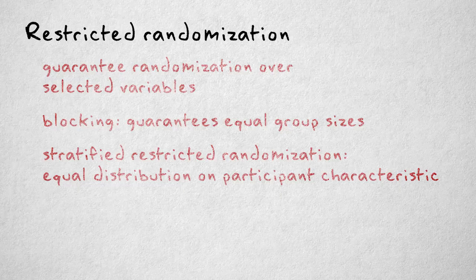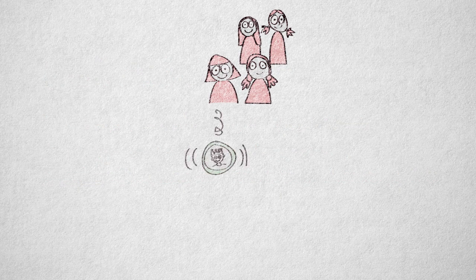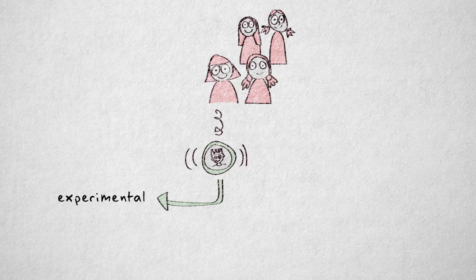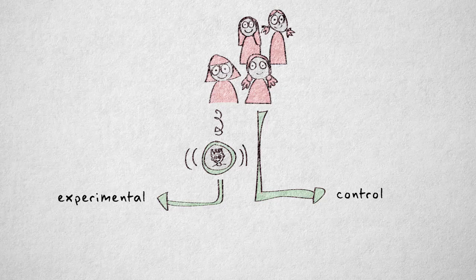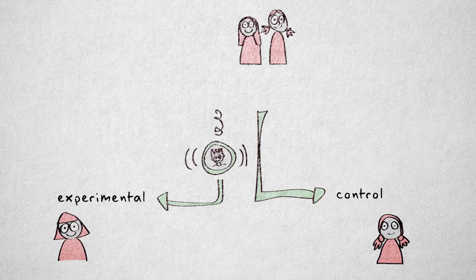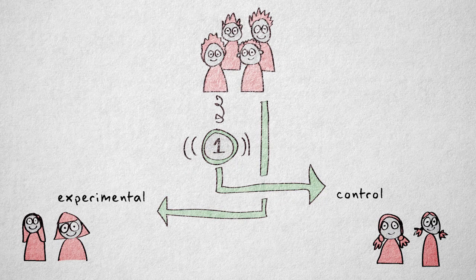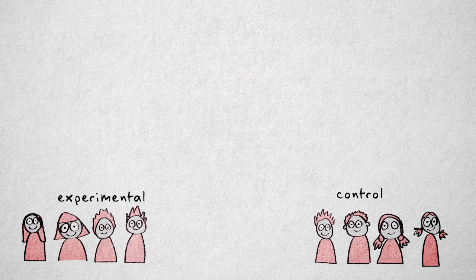We can arrange this by first pairing up all the girls and, for each block of girls, flipping a coin to determine to what condition the first girl is assigned. We then automatically assign the second girl to the other condition. We now have a girl in each condition. We do the same for the second block of girls and end up with two girls in each condition. The same method is applied in assigning the boys so that we end up with two boys and two girls in each condition.